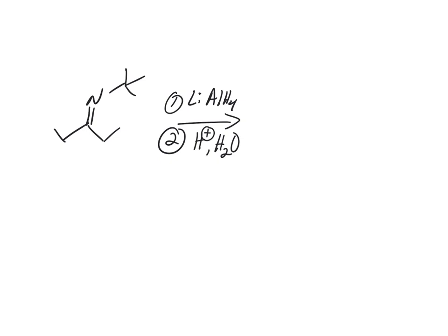Right now we have an imine. An imine comes from a ketone — in this case, 2,3,3-pentanone — and a primary amine, tert-butylamine, with an H⁺ catalyst. So now we have an imine, and what we're going to do with this imine...